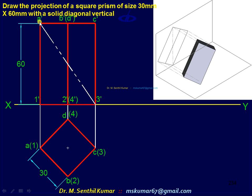That is why you have to draw the square in top view this way. Now the first set of top view and front view is over. How to get the solution? You have to tilt this front view such that A dash 3 dash is vertical. That means the solid diagonal is vertical.